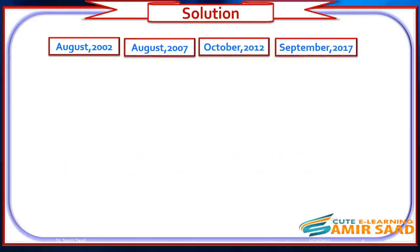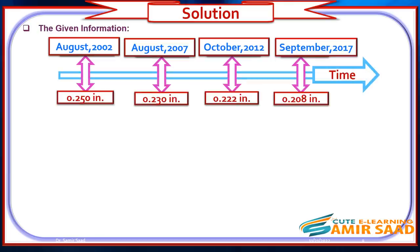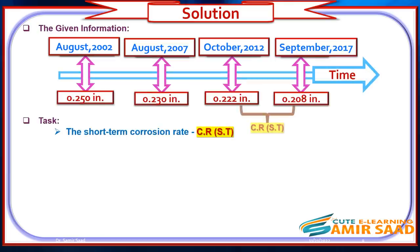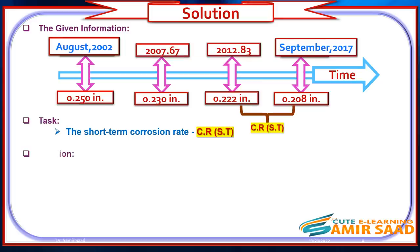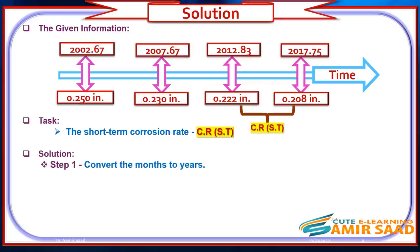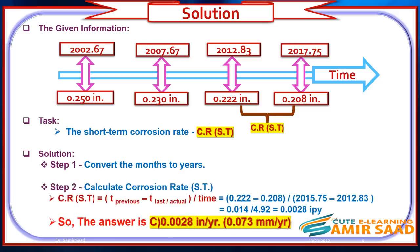Solution — Example 1: Step 1: Convert the months to years as shown on the diagram. Step 2: Calculate the corrosion rate by plugging the given values into the short-term formula. The answer is 0.0028 inch per year.